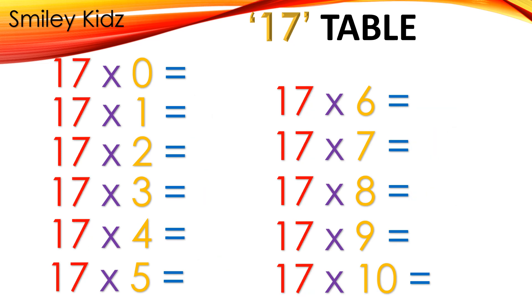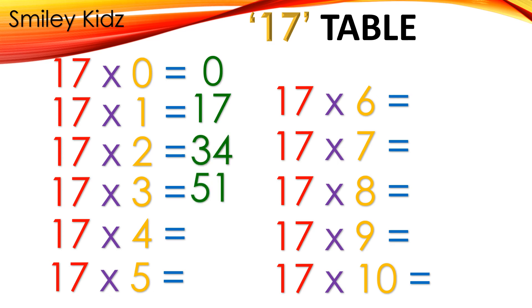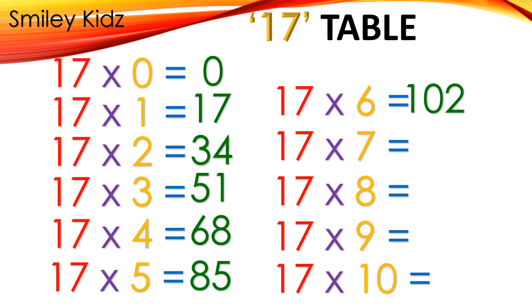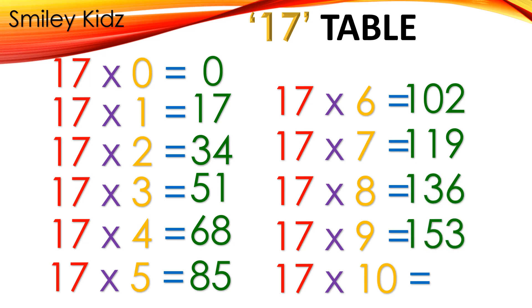Table 17: 17×0=0, 17×1=17, 17×2=34, 17×3=51, 17×4=68, 17×5=85, 17×6=102, 17×7=119, 17×8=136, 17×9=153, 17×10=170.